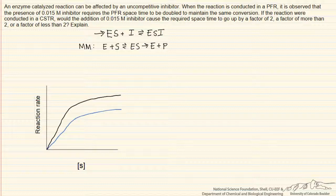If we sketch this qualitatively on our plot, we expect that the inhibitor is going to have the greatest effect on the rate at high substrate concentration.